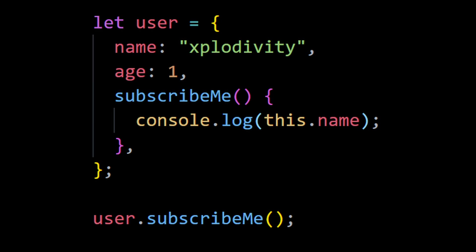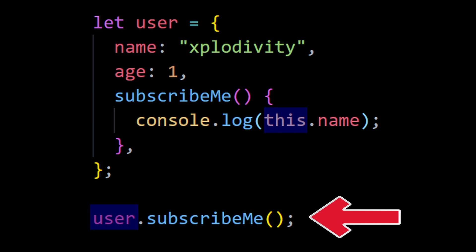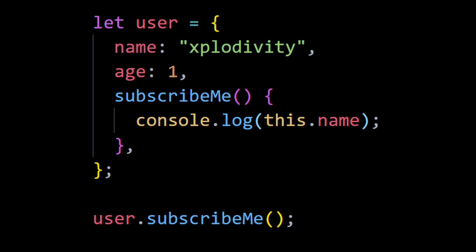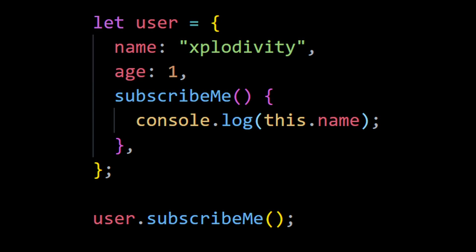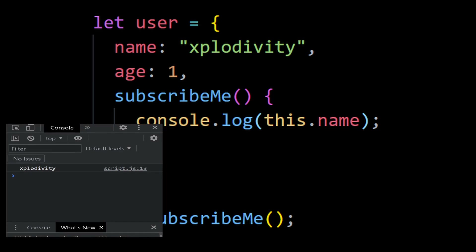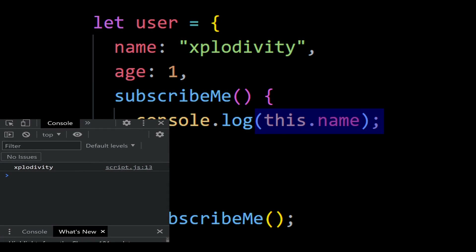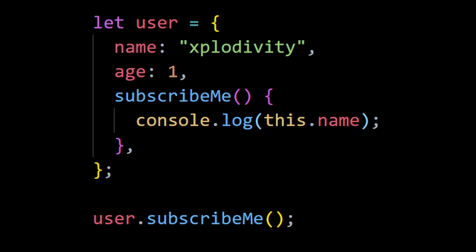To access the object or its properties, a method can use the 'this' keyword. The value of 'this' is the object before the dot, which means when we write user.subscribeMe() to call the method, 'this' refers to the user object. So whenever we use 'this' inside the subscribe me function it refers to the user object, and the browser is able to print out the name 'explodivity' using this.name in the console.log.